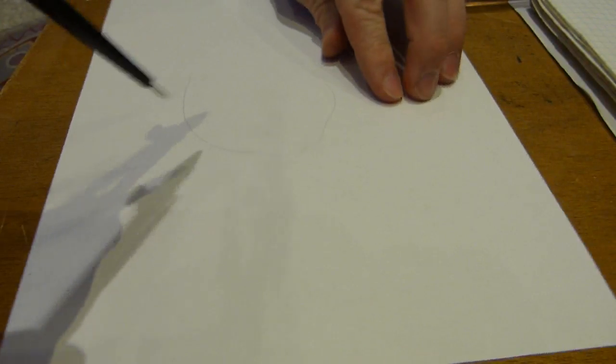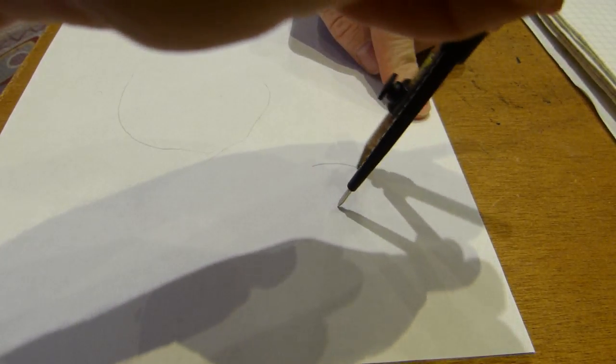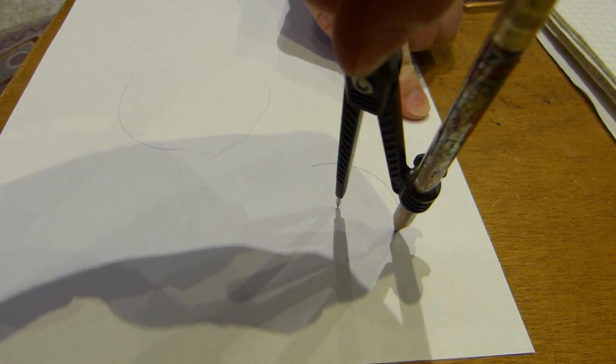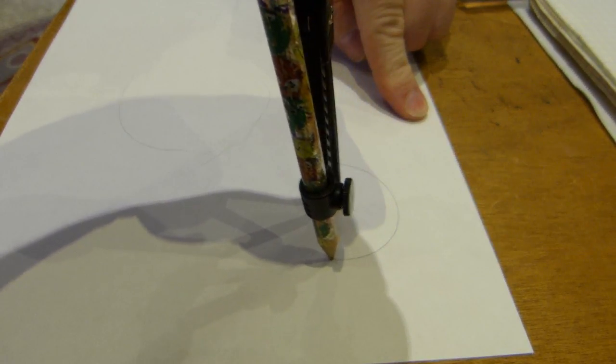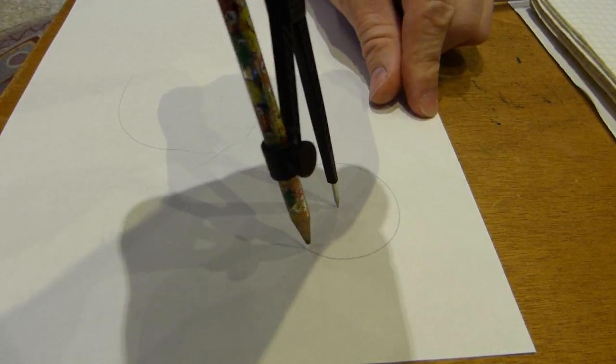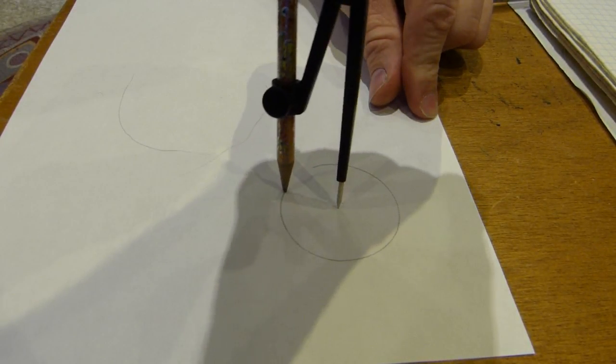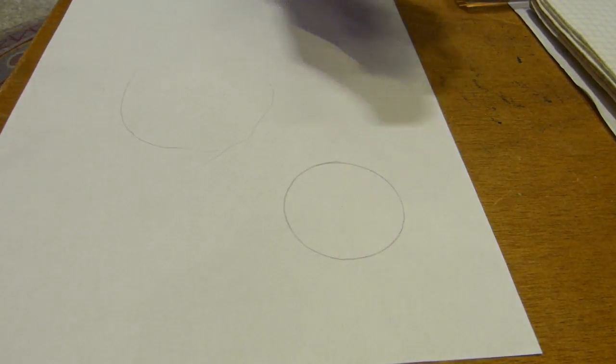Take two. Let's try to make another circle again. This time, somewhere here. Let's make a small circle. Something like that. Let's see how this goes. Nice. So far, so good. Re-grip, because the pencil is still too long.